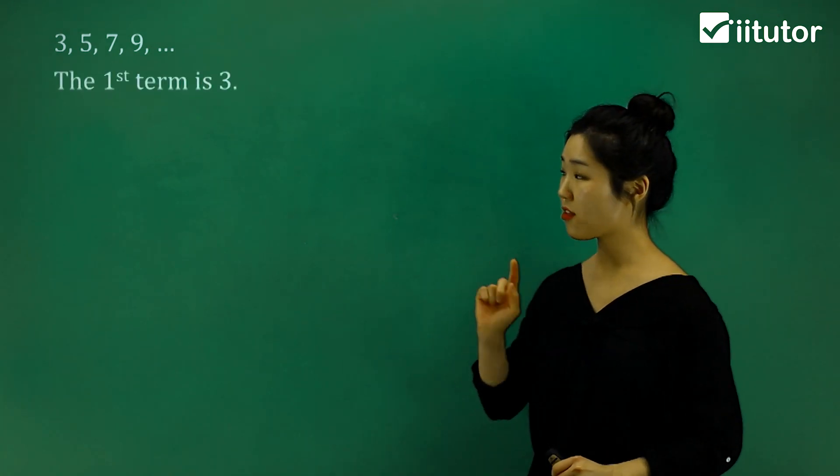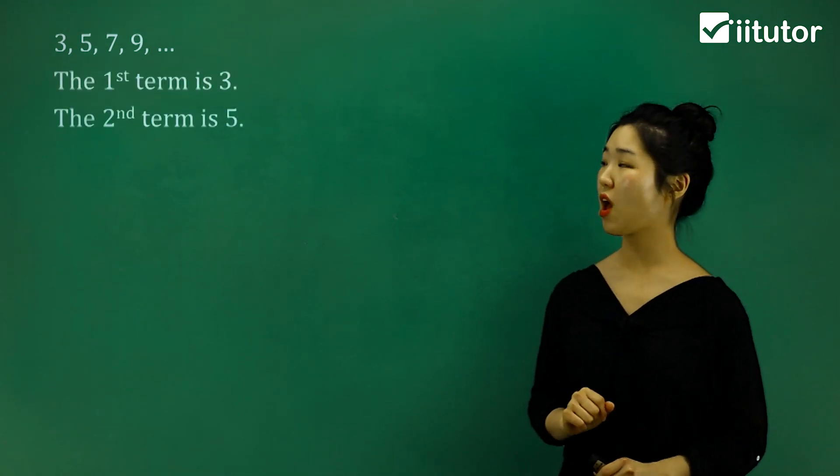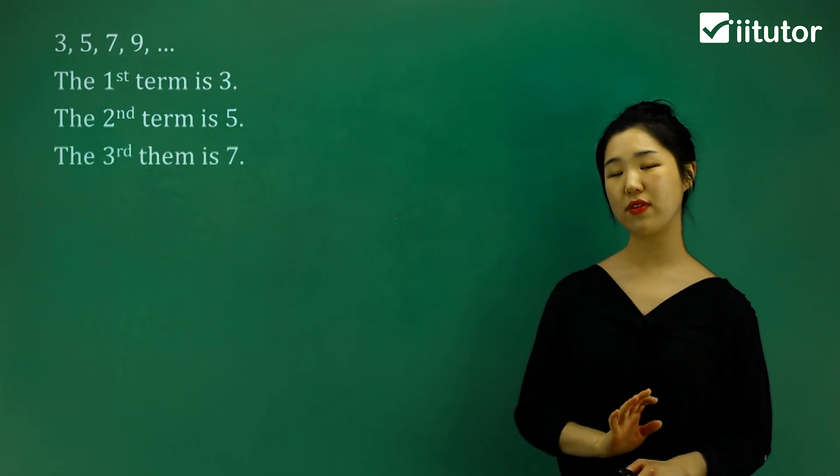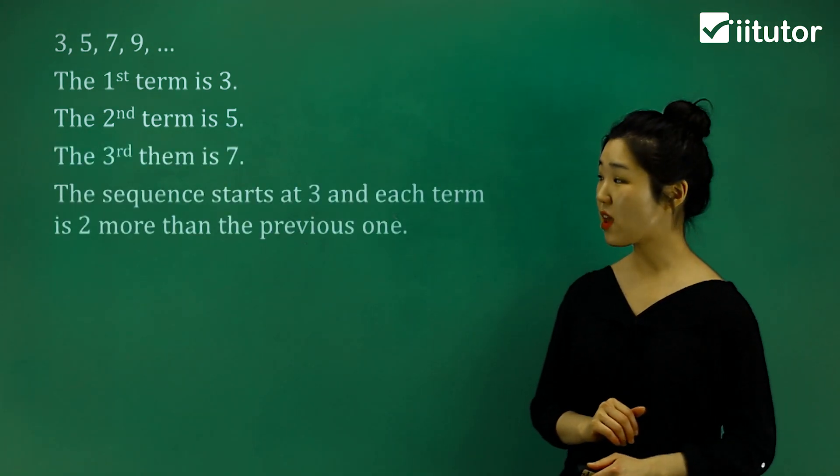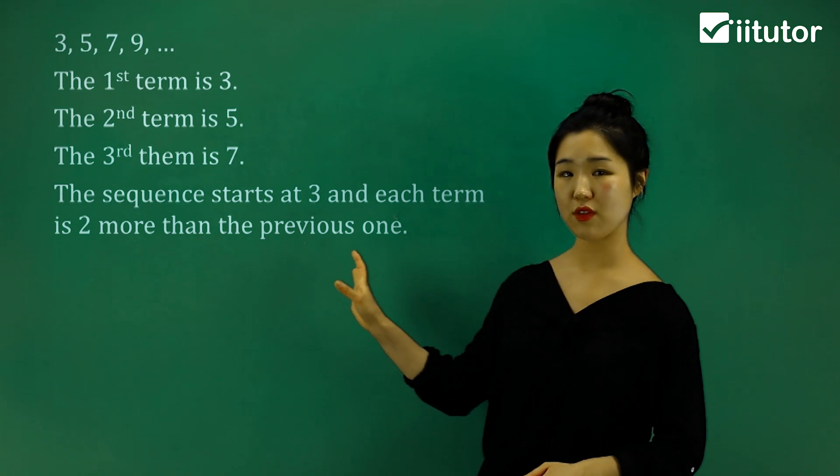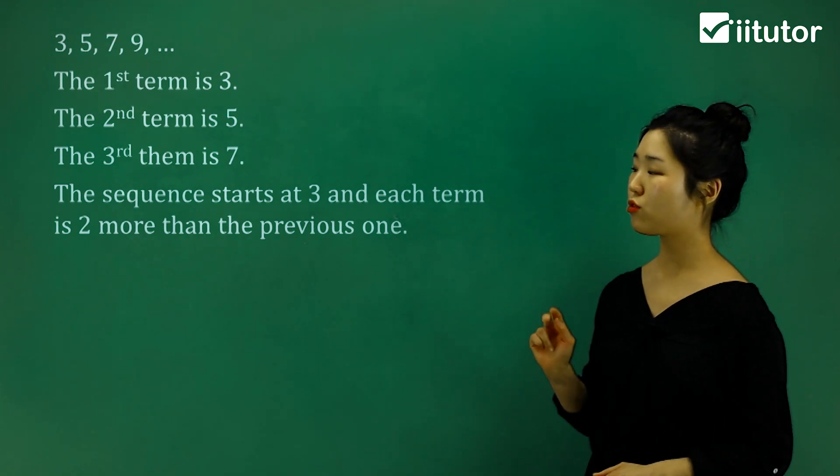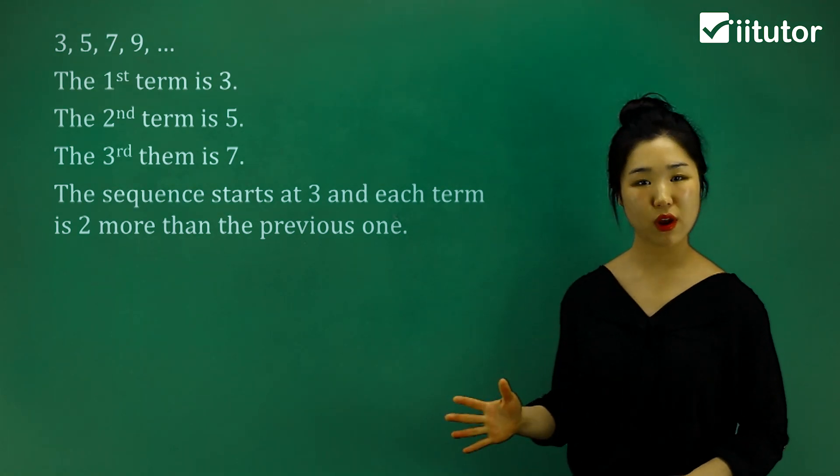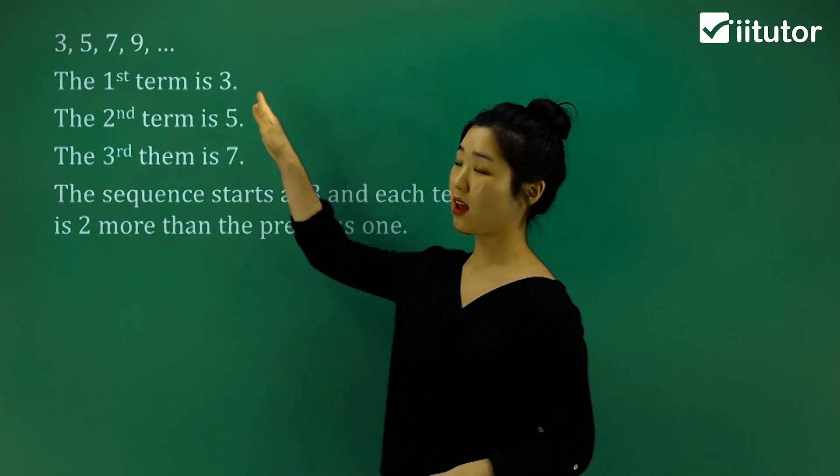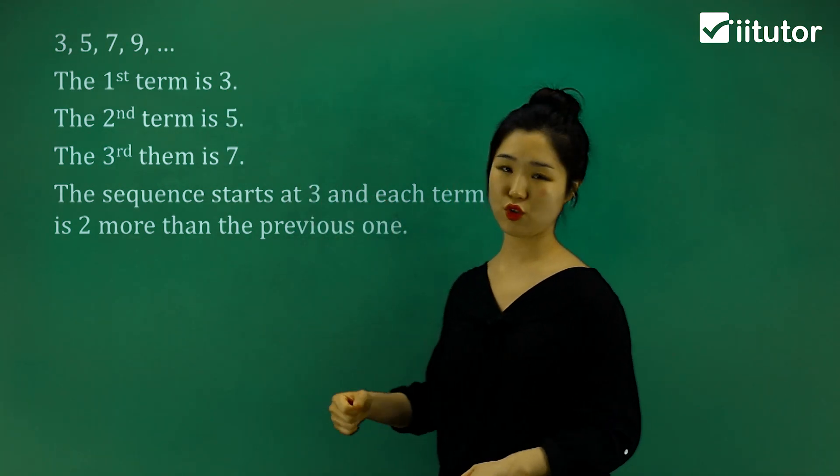Well, you can see that the first term is 3, the second term is 5, the third term is 7, and you know that the sequence starts with 3, and each term is 2 more than each previous one. So you can see what I'm basically doing to get each consecutive one. We're simply adding 2.